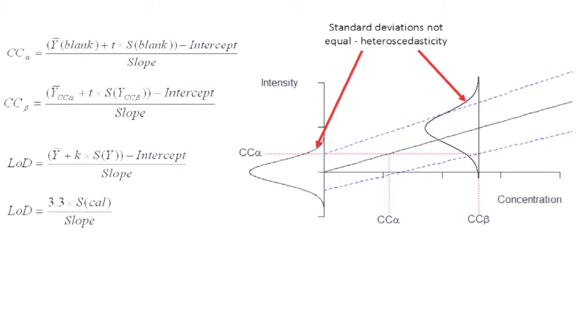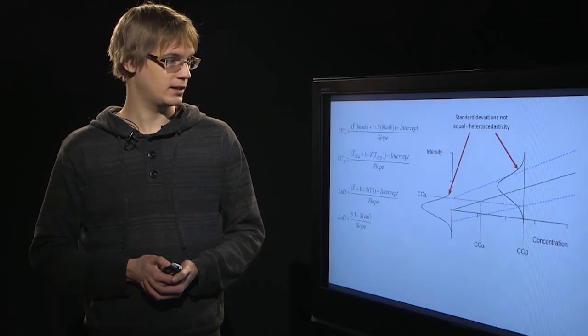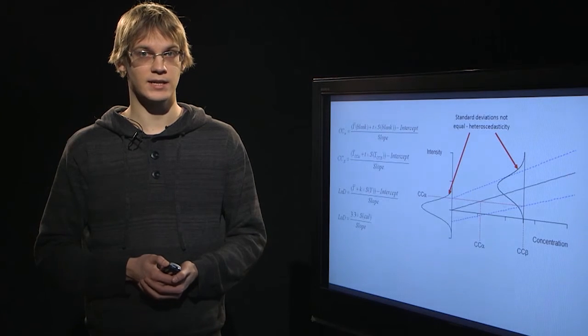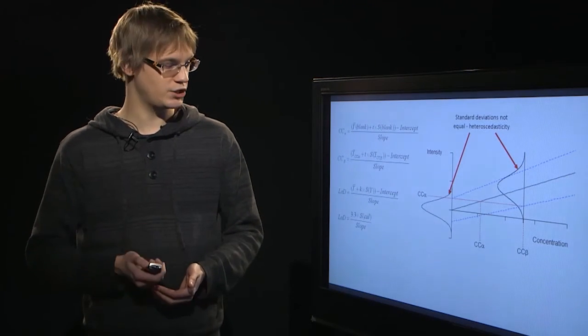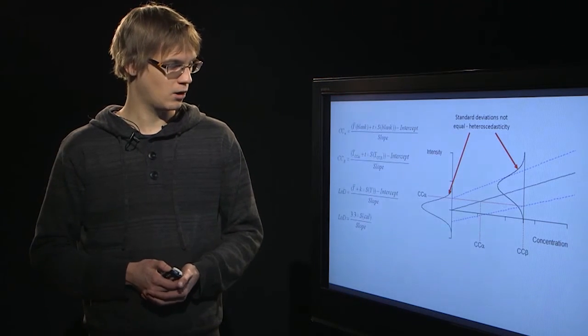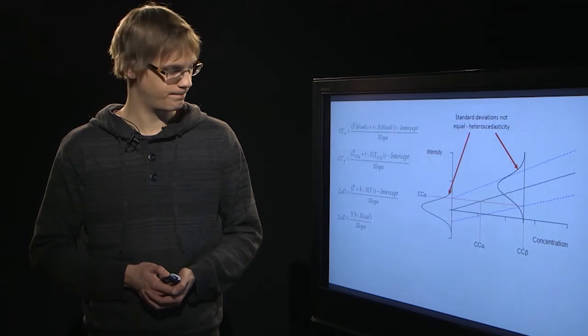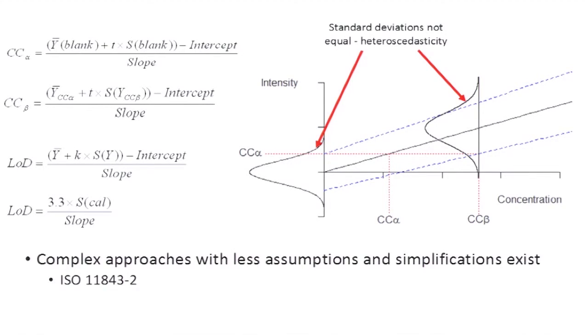Now let's look at the limit of detection calculations that we saw in an earlier video. Here we can see that these equations are very similar. In the second equation, the real difference is that the mean value of the intensity and intercept is taken to be equal. The t value is defined as 3.3, and the standard deviation is taken from the calibration line. Of course, these approaches assume that the data is homoscedastic.